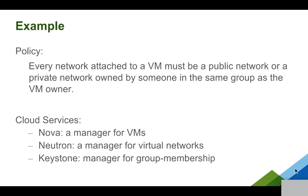Here's an example to ground these high-level ideas. On this slide you see both inputs: the policy and the cloud services. The cloud services in this example are Nova, Neutron, and Keystone. The policy we want to describe is simple: every network attached to a VM either needs to be a public network — shared and available to anyone — or the owner of the VM and the owner of the network must belong to the same group, where a group is defined via LDAP and given to the system via Keystone. What's important is that it's a cross-domain policy: it talks about how Keystone, Nova, and Neutron must all interact to satisfy the cloud operator's desires.